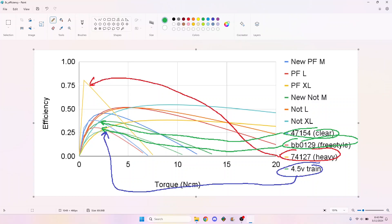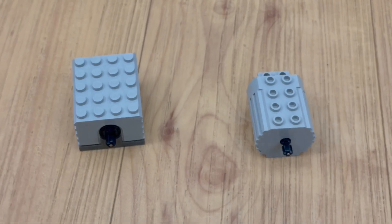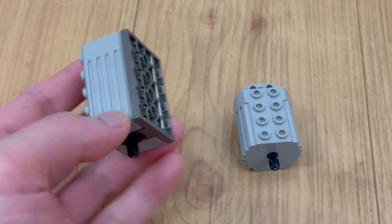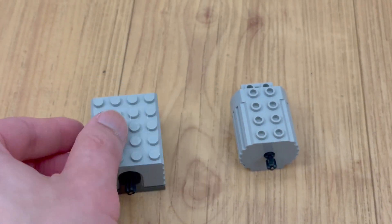The 4.5V motor might have the same problem, on top of being much older and therefore more worn. I wanted to test the ungeared 9V and 4.5V motors.